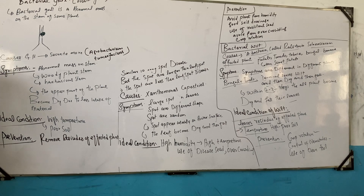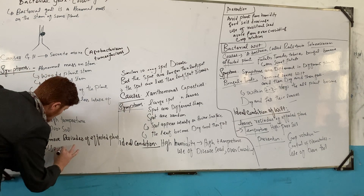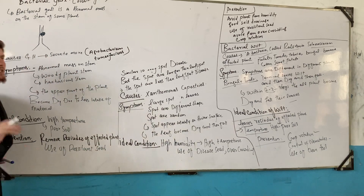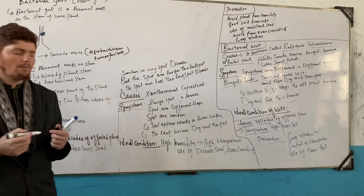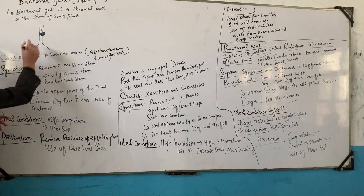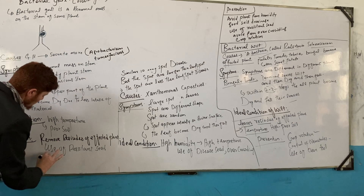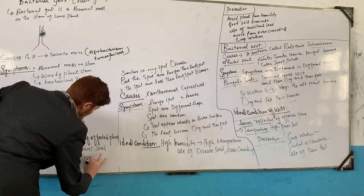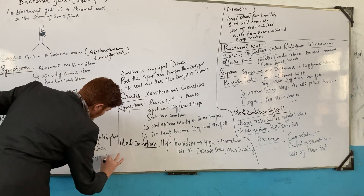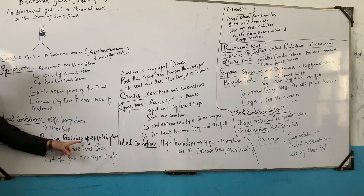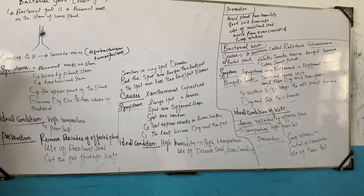Prevention includes: remove and dispose of affected plants, use of resistant seeds, and cut out the gall through a knife. These are the key management strategies for bacterial gall.